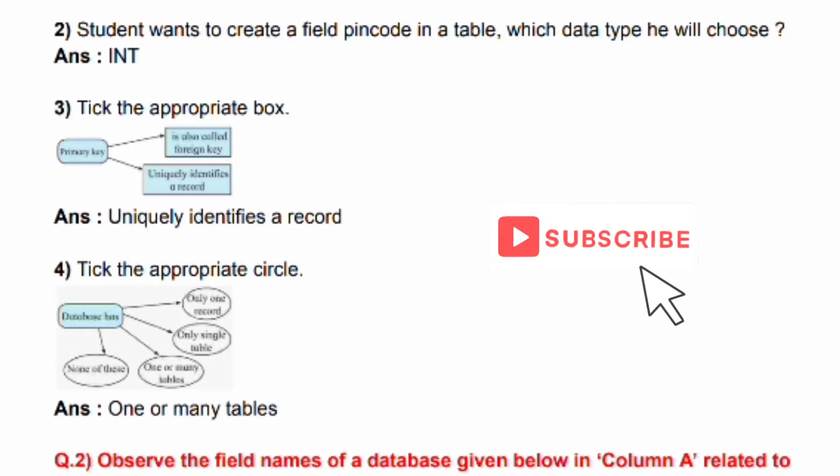A student wants to create a field 'pin code' in a table. Which data type will he choose? The answer is Int. Tick the appropriate box: the answer uniquely identifies a record.